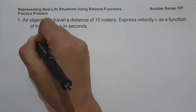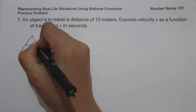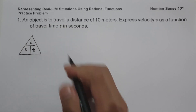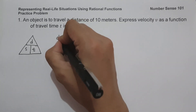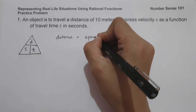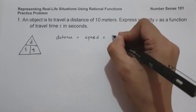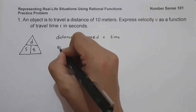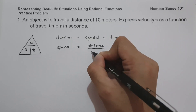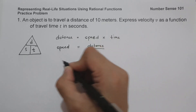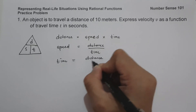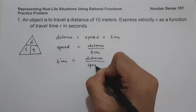Let us use a triangle to visualize the relationship. On the top, that is distance. On the left, that is speed. And on the right, that is time. If you are looking for distance, that is speed multiplied by time. If you are looking for speed, that is distance divided by time. And if you are looking for time, that is distance divided by speed.